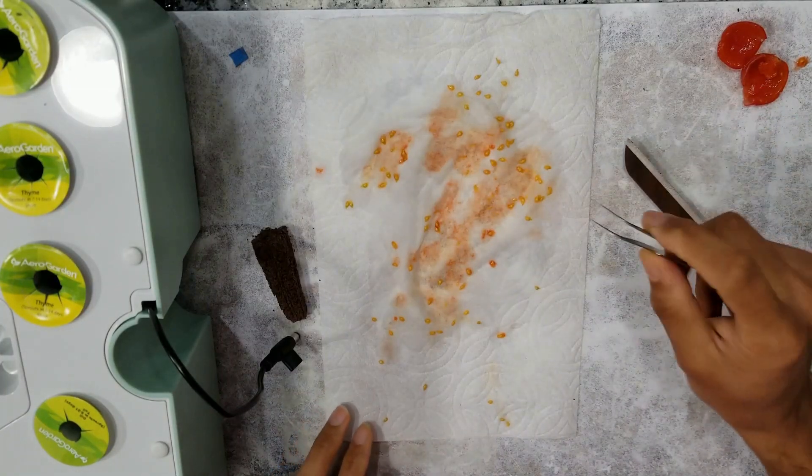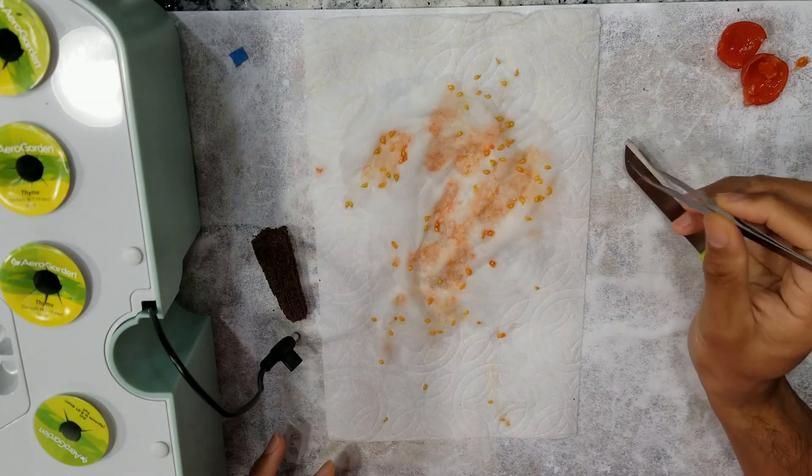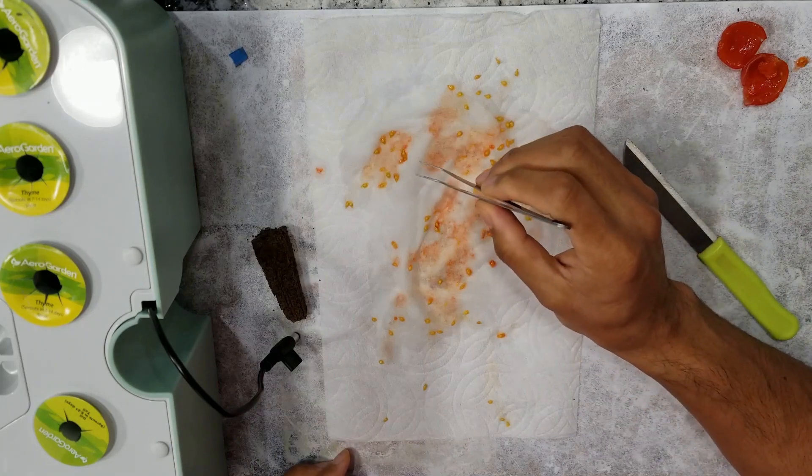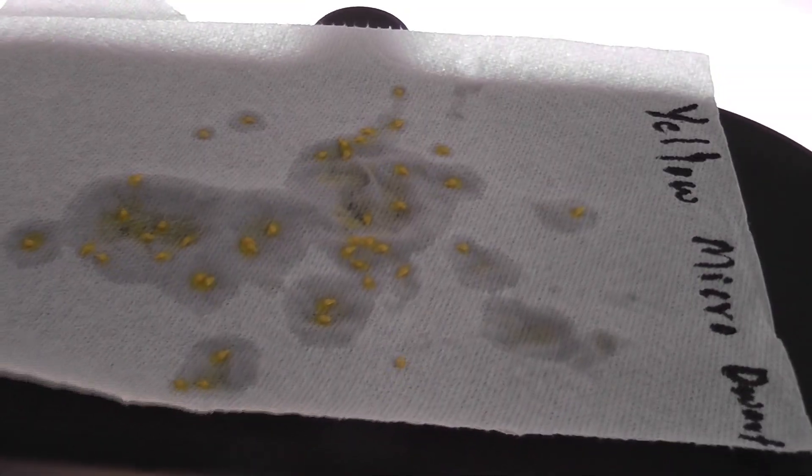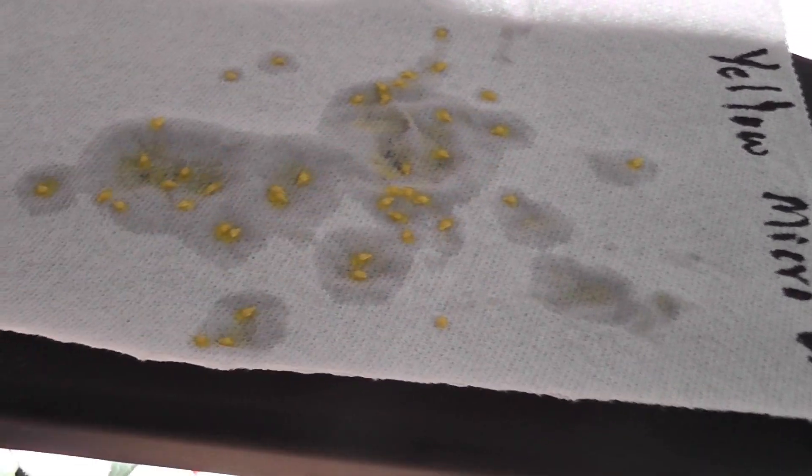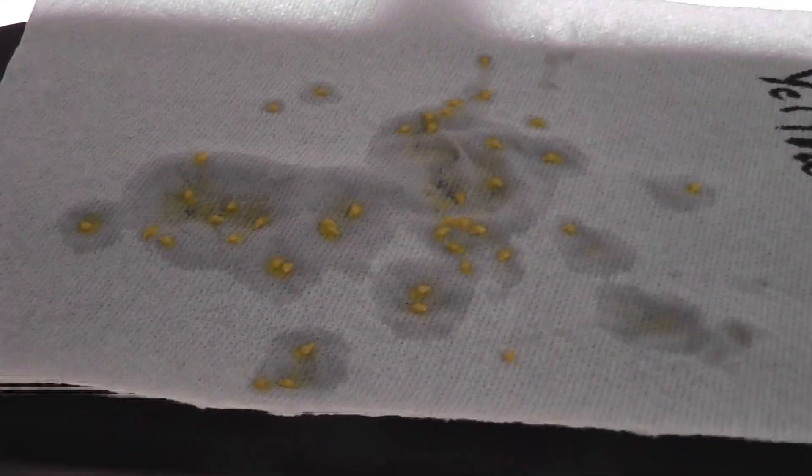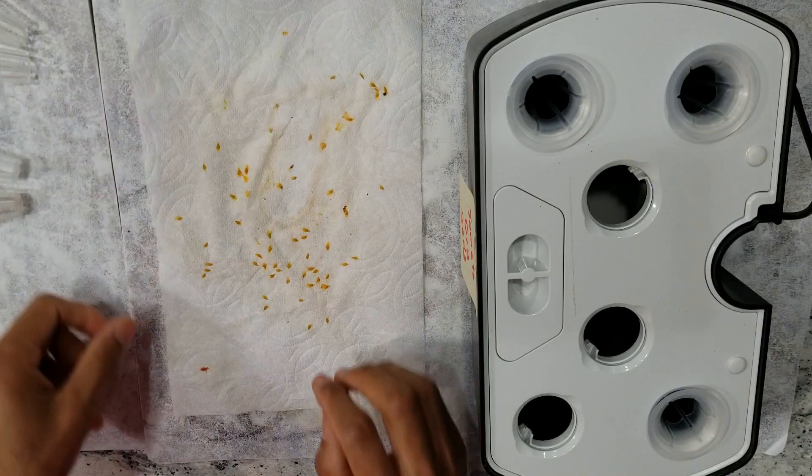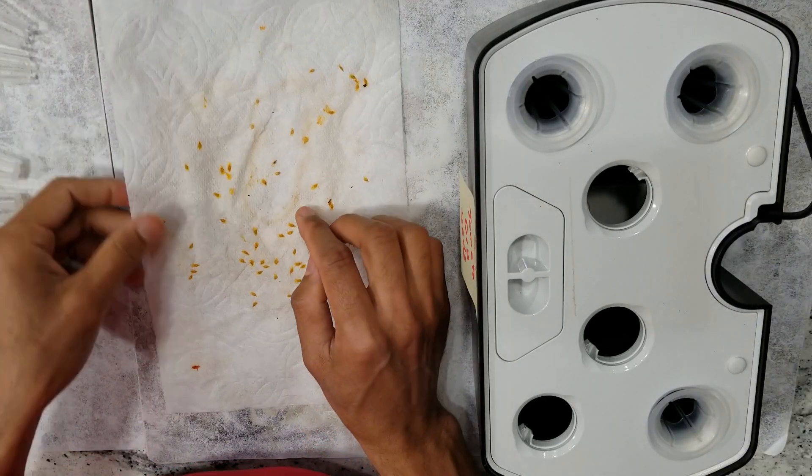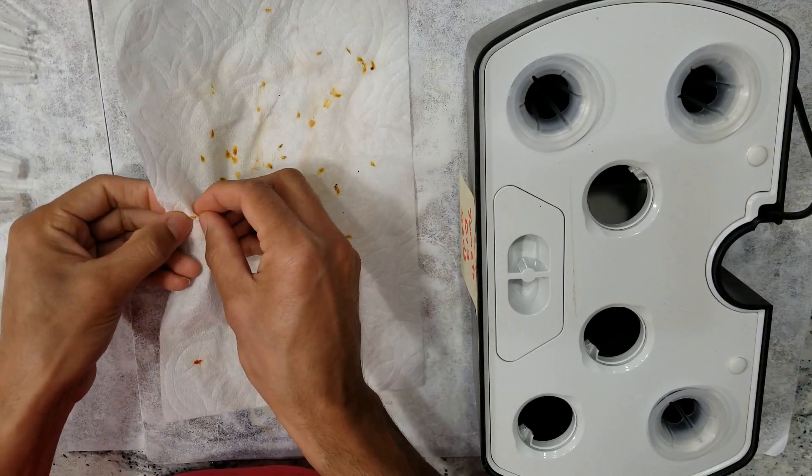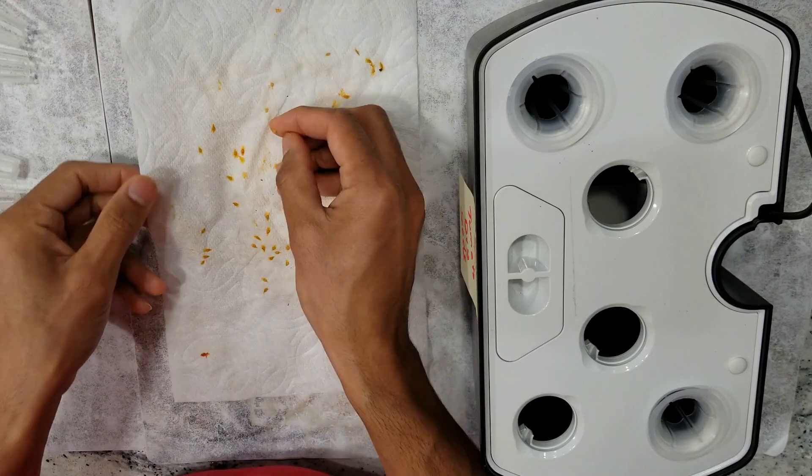Now keep the paper towel aside until the seeds are completely dry. I usually keep it on top of the aero garden light panel. Aero garden light panel is always warm and it accelerates the drying process. It's been a week and the seeds are completely dry. You can keep drying them as long as you want, but one week is well enough in my experience.